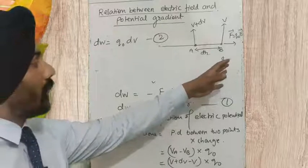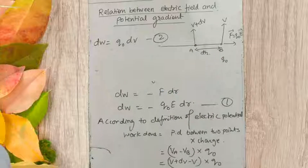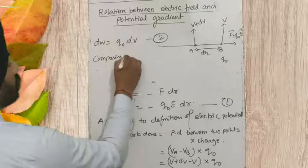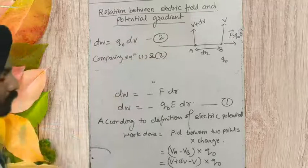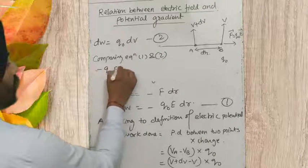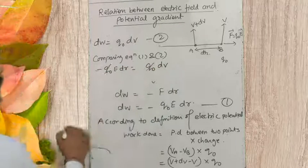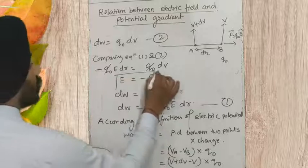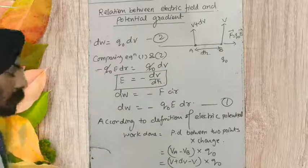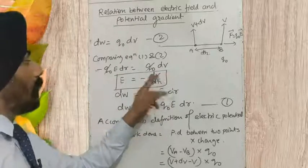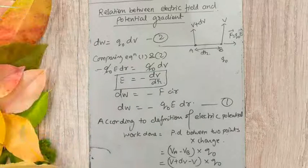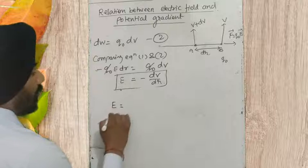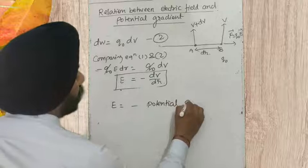The work done is the same because the same charge is being shifted from point B to point A over the same distance in the same electric field. Comparing equation one and two: minus q₀E·dr = q₀·dV. The q₀ cancels, giving E = minus dV/dr. Here dV/dr is the potential per unit distance, which is called the potential gradient. So the electric field E equals the negative of the potential gradient.